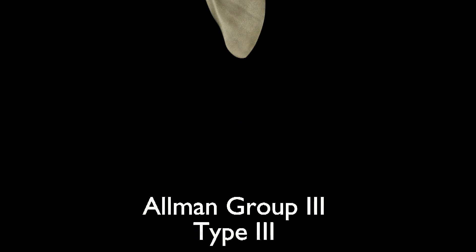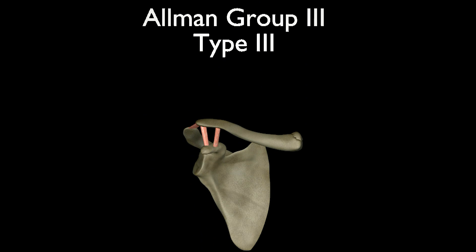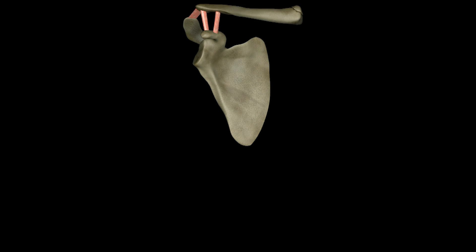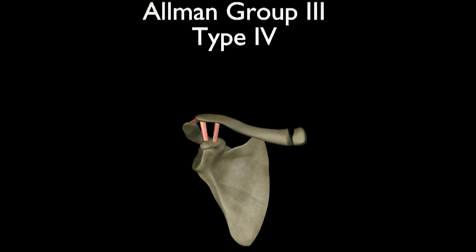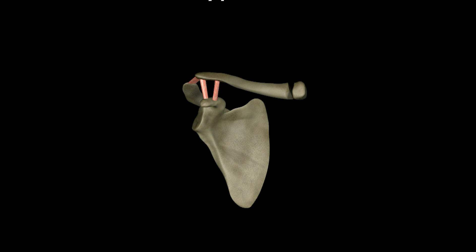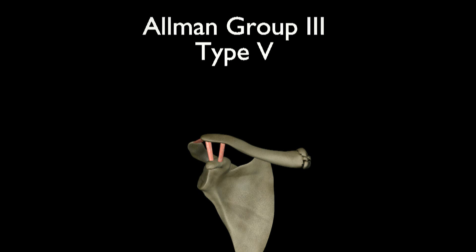Type 3 fractures involve the sternoclavicular joint and may result in arthritic changes later on. Type 4 fractures separate the tip of the clavicle from the shaft at the growth plate; if minimally displaced, they can be treated without surgery. Type 5 fractures are comminuted, meaning in pieces, and are usually treated non-surgically but can result in arthritic changes later on.